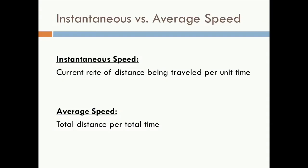You can think of this like a car ride. If you're traveling from point A to point B, and at any point you happen to look down at your speedometer, you'd be looking at your instantaneous speed — your speed at that instant of time. However, once you get to your destination, if you took the total distance and divided it by the total time it took you to get there, you'd have your average speed.